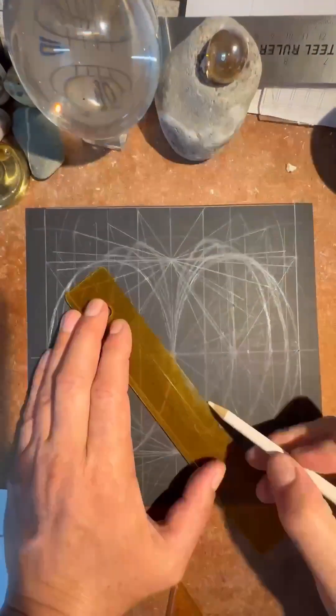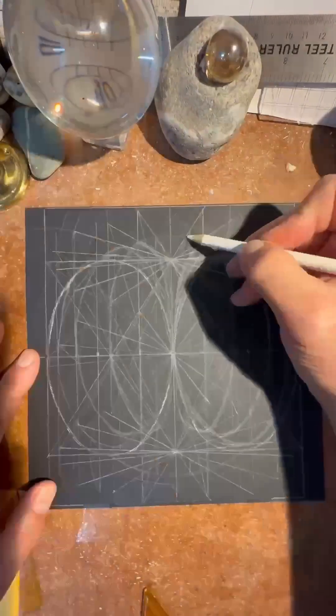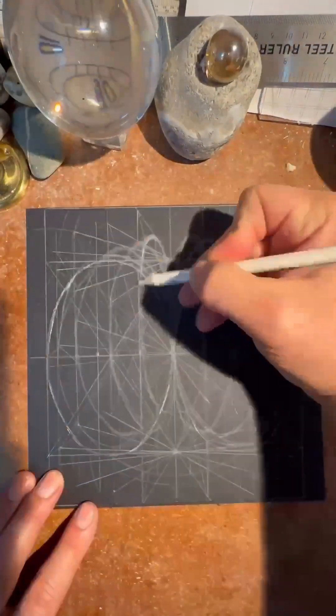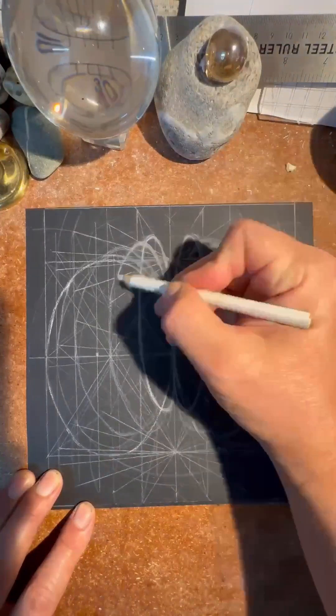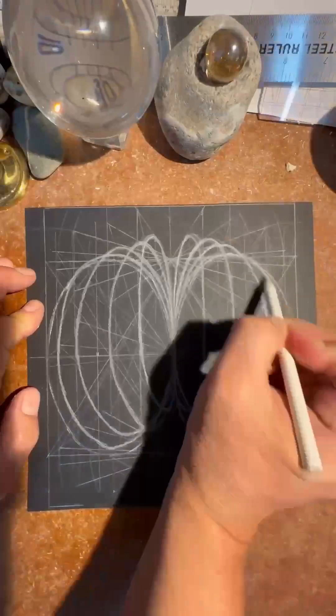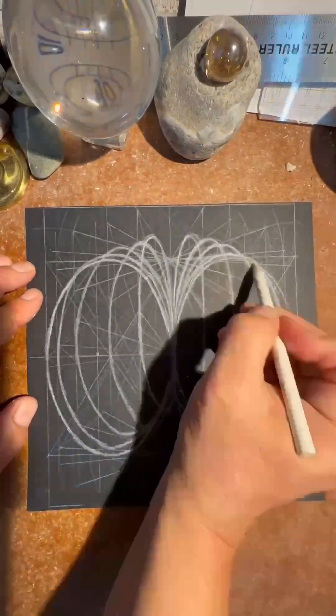Once you've got all of these sketched in, use your pencil to slightly darken or lighten them. I'm using white to create these lovely symmetrical ellipses radiating out.